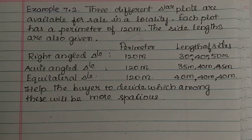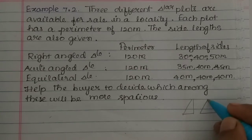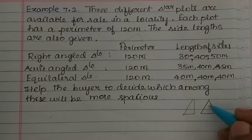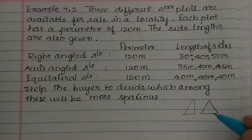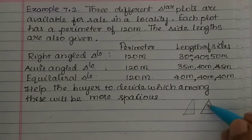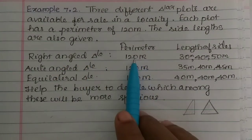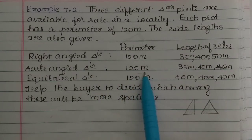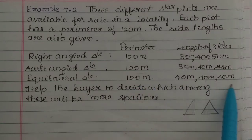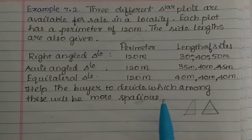The space inside is the area. A right angle triangle has a 90-degree angle, an acute angle triangle has all angles less than 90 degrees, and an equilateral triangle has 3 equal sides. If you look at the space, the area will vary for each type. We need to help the buyer decide which of these three triangular plots will be most spacious.